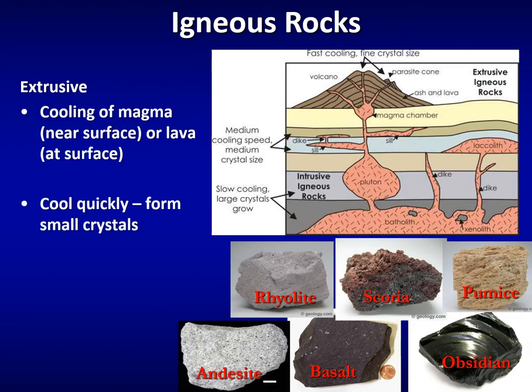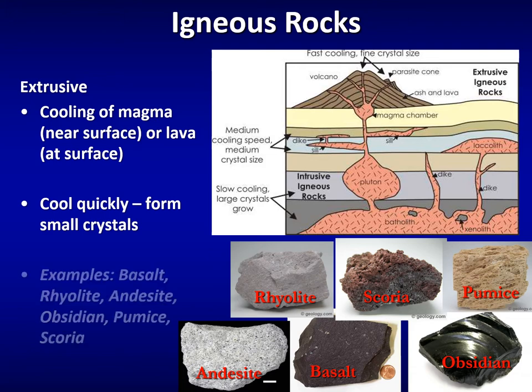Extrusive igneous rocks form from the cooling of lava at or near the Earth's surface. Because they cool very quickly, the crystals don't have time to grow large — they're about the size of a pencil point. Different magma compositions produce different rocks: basalt, rhyolite, and andesite are fine-grained; scoria and pumice are frothy-textured; and obsidian is volcanic glass that cooled so fast there are no grains at all.